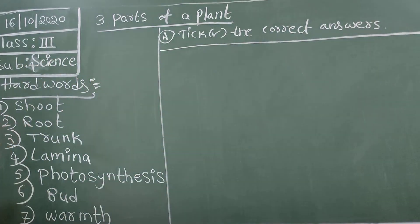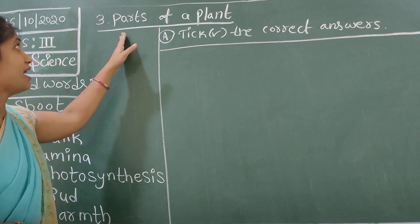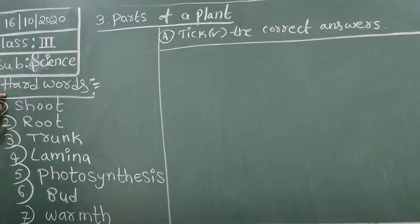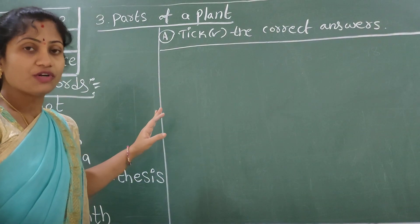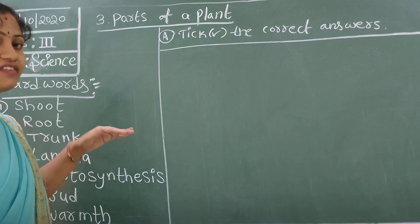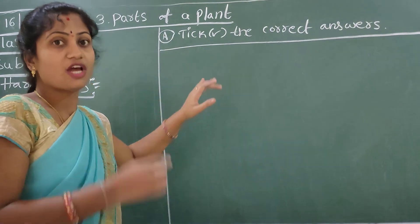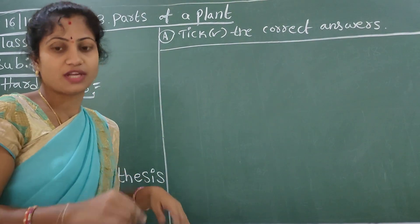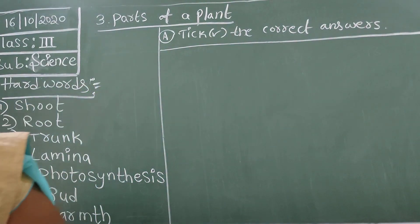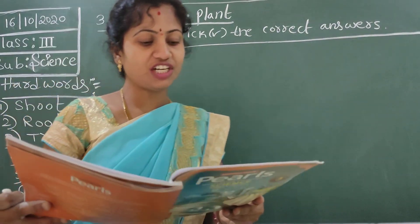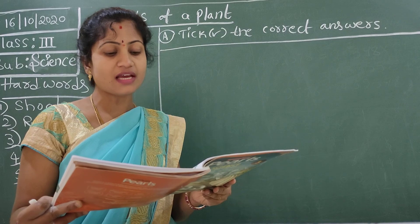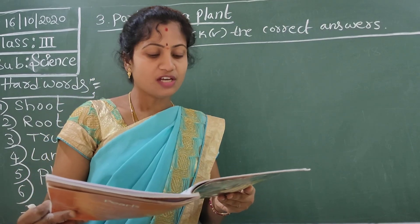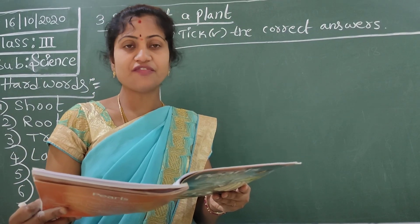First, you have to underline these words in the text book, afterwards keep the heading with lesson name and hard words, then write in your class work. Now - in addition to the stem, branches, leaves and buds, the shoot of a plant also bears - flowers and roots, fruits and roots, or flowers and fruits?